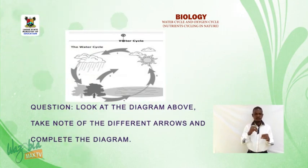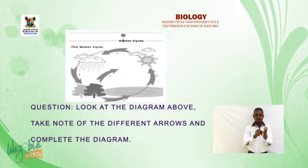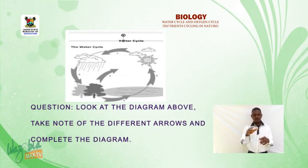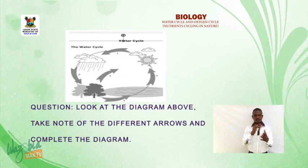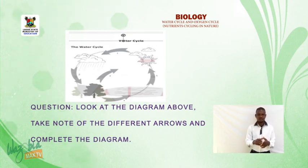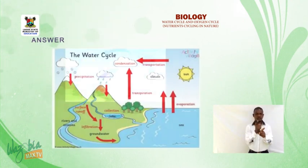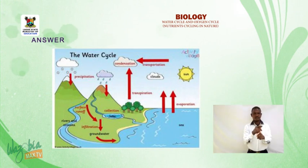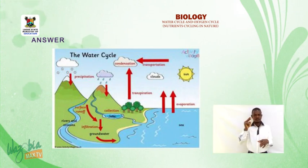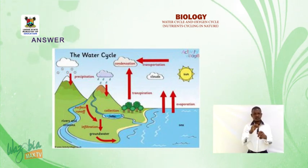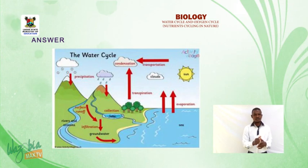Look at the diagram, take note of the different arrows, and complete the diagram. Now look at the second diagram and take note of your corrections.